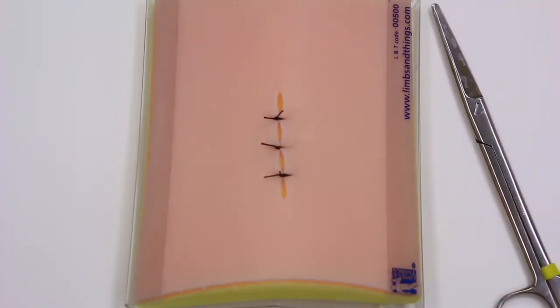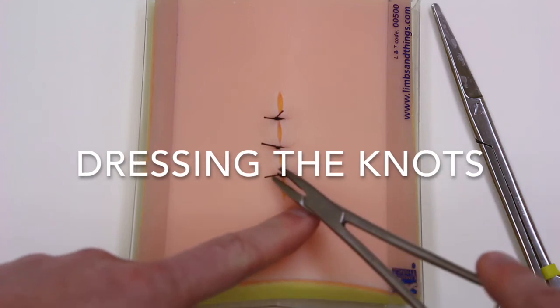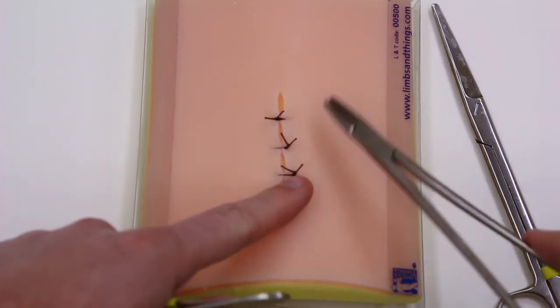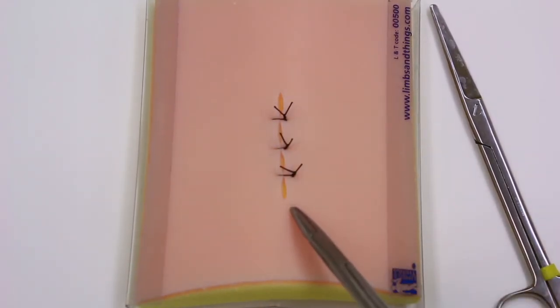So just a few more pointers to think about when you're doing this. You're going to have to take these out someday. So be kind to yourself and to your patient. Pull your knots off to one side. You do not want the knots hanging out in the middle, because this is going to get all scabbed and crusty.